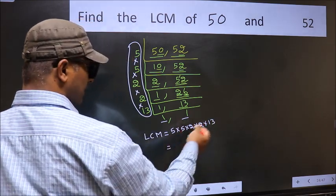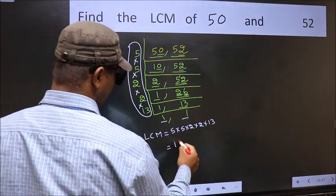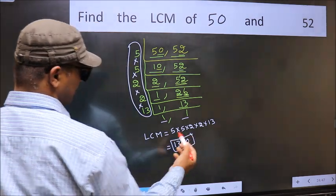When we multiply these numbers, we get 1300 as our LCM.